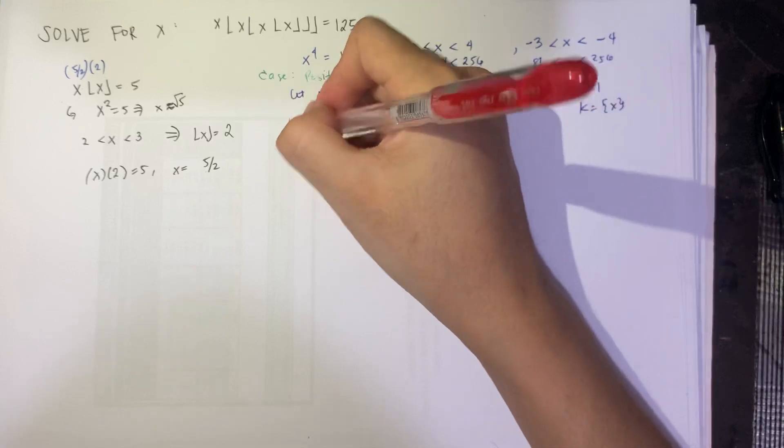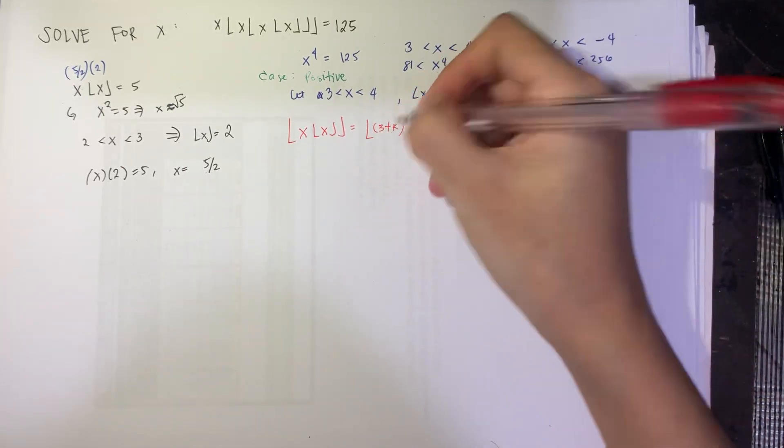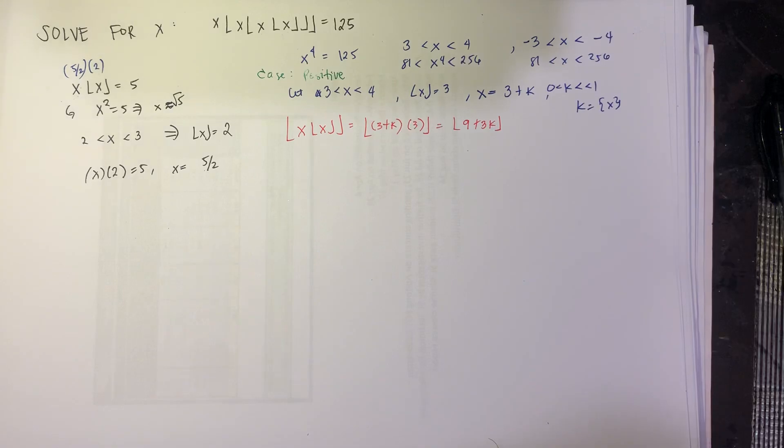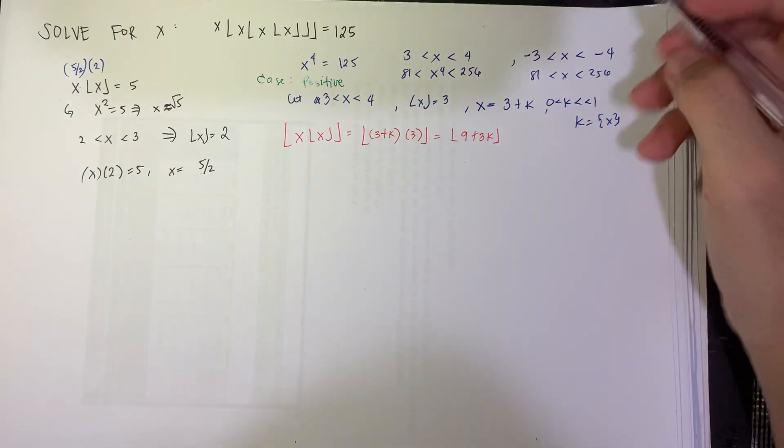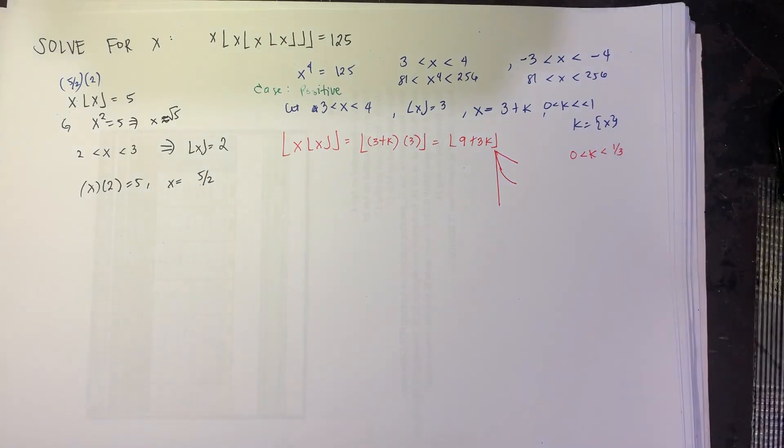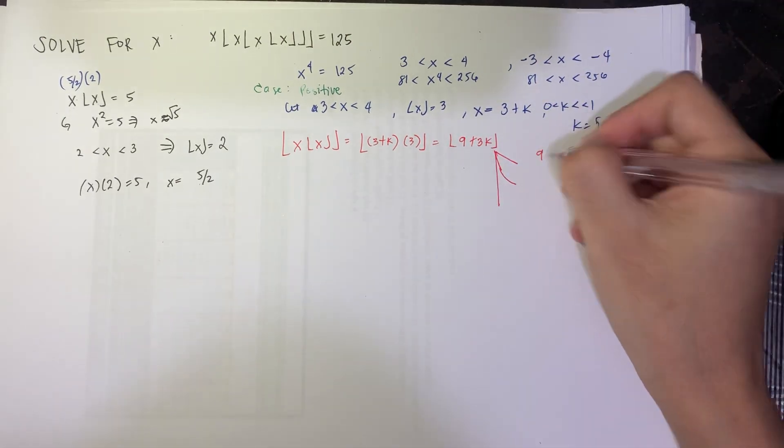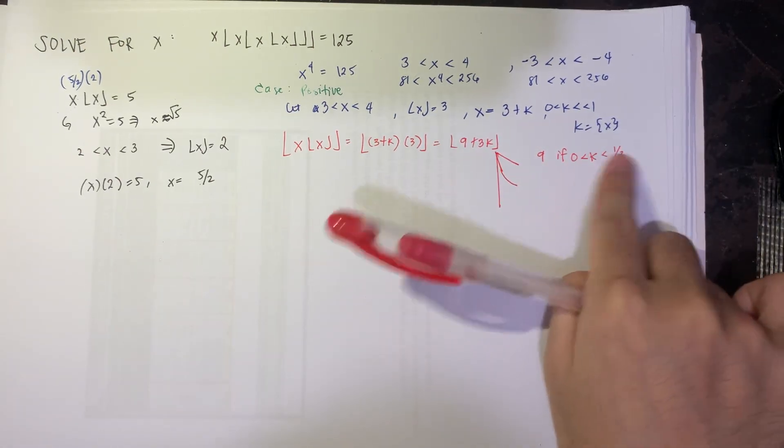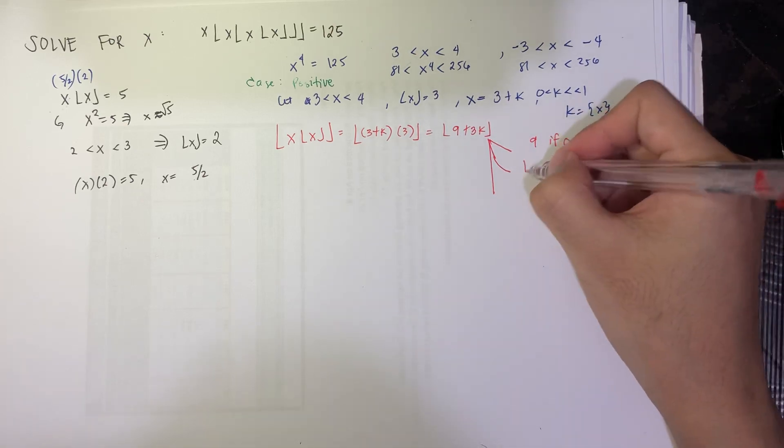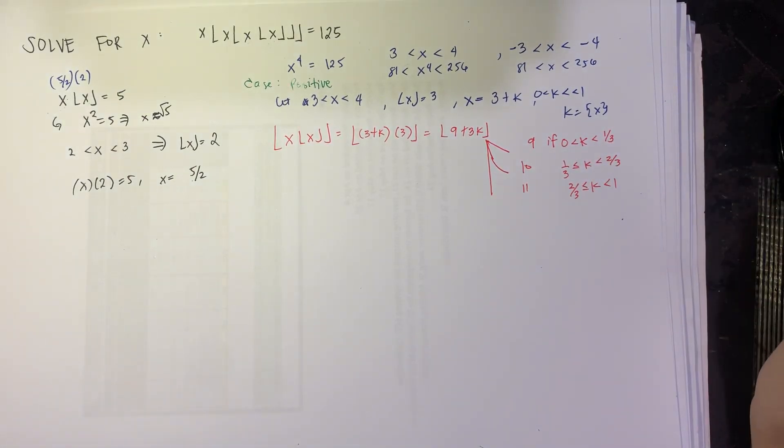So this becomes, the floor of x, floor x is equal to, since x is 3 plus k, so this is 3 plus k, and then floor of x is 3, this becomes floor of 9 plus 3k. Now this can have 3 values. Because if k is between 0 and 1 third, then this one, the floor of this one is 1 third times 3, 1, so it's as small as 0, so this one is 9. The floor is 9 if k is between this. On the other hand, if k is between 1 third and 2 thirds, this one becomes, at most, 2 thirds, so that becomes 10. And finally, this can also be 11 if k is between 2 thirds and 1.